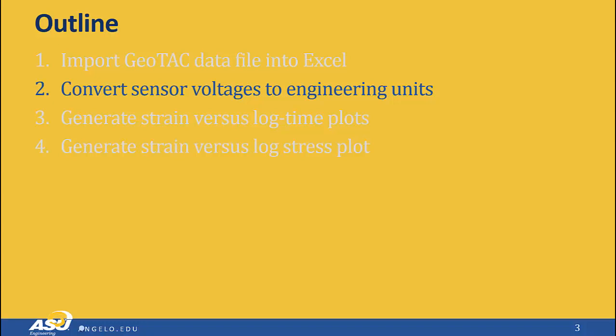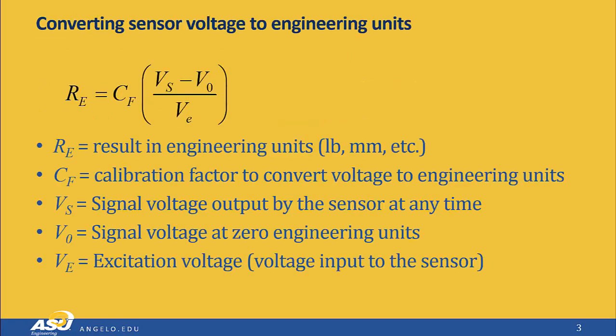This takes us to step two: converting the sensor voltages into engineering units. The sensors in this test don't actually return engineering units — they return voltages. For example, the load cell returns a voltage proportional to the load on the cell, but it's not in pounds or newtons. And the displacement sensor returns a voltage proportional to displacement, but it's not the actual displacement. So we need to use a formula to convert these output voltages to actual engineering units — either pounds for the load cell, or inches or millimeters for the displacement sensor.